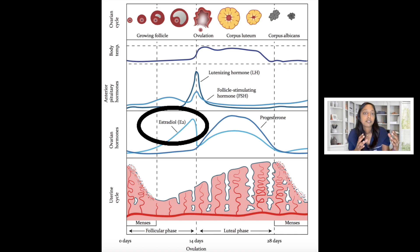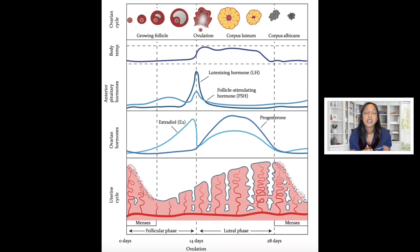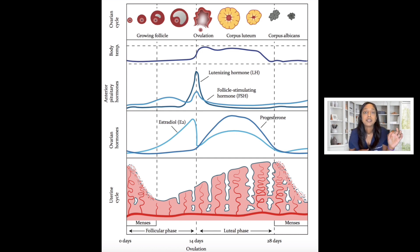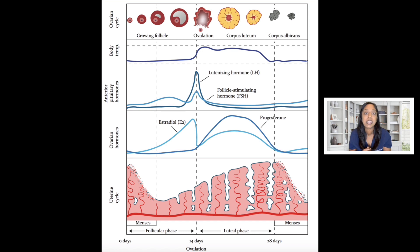Once the follicle reaches a certain size and a certain critical level of estrogen is reached, the brain will then produce LH. This is known as the LH surge, and the LH surge will prompt ovulation to occur approximately 24 to 36 hours later. Ovulation is basically the release of the egg from the follicle. The egg will then travel down the fallopian tube. Hopefully intercourse happens around the same time and sperm will travel through the vagina, cervix, and uterus.